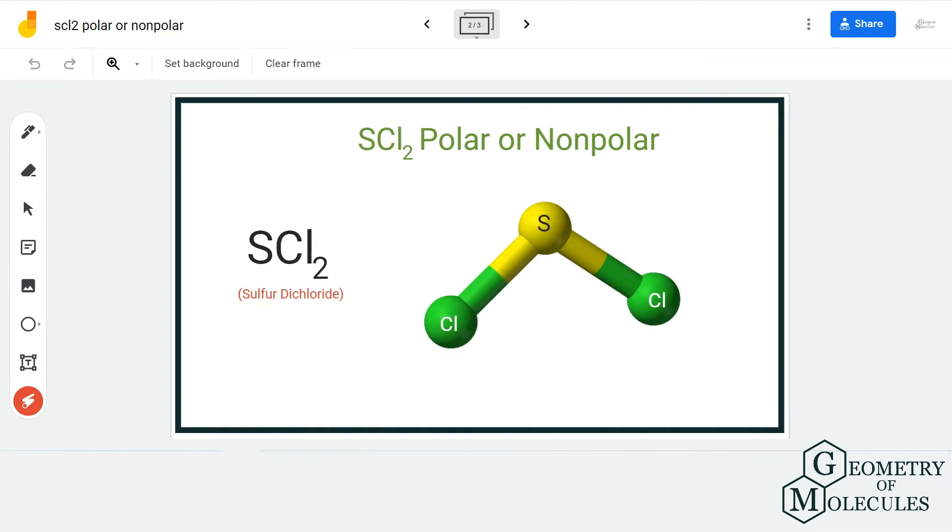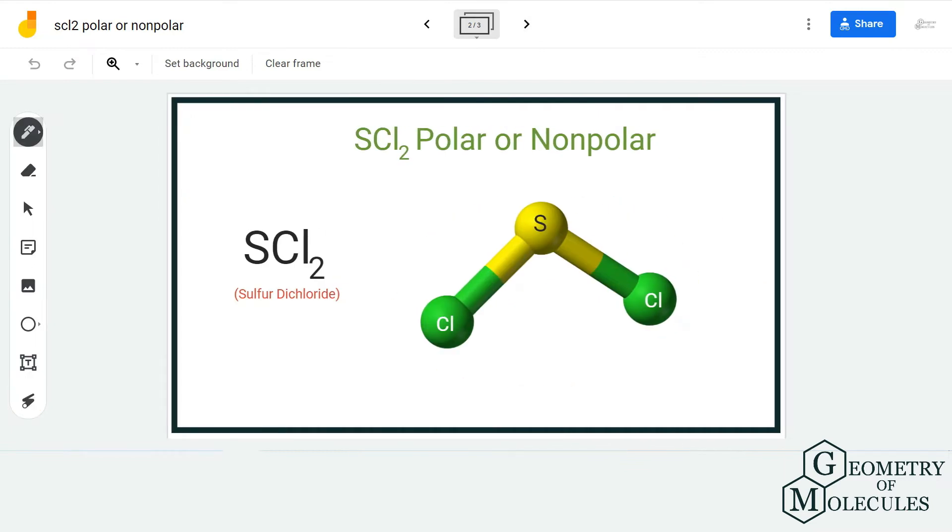These lone pairs cause a bent in the shape, and as a result the molecular geometry of this molecule is bent.